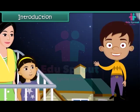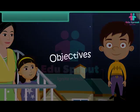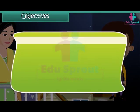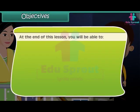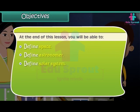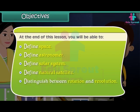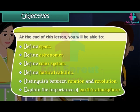In this lesson you'll learn about the objects in space. At the end of this lesson you'll be able to: define space, define astronomer, define solar system, define natural satellite, distinguish between rotation and revolution, and explain the importance of earth's atmosphere.